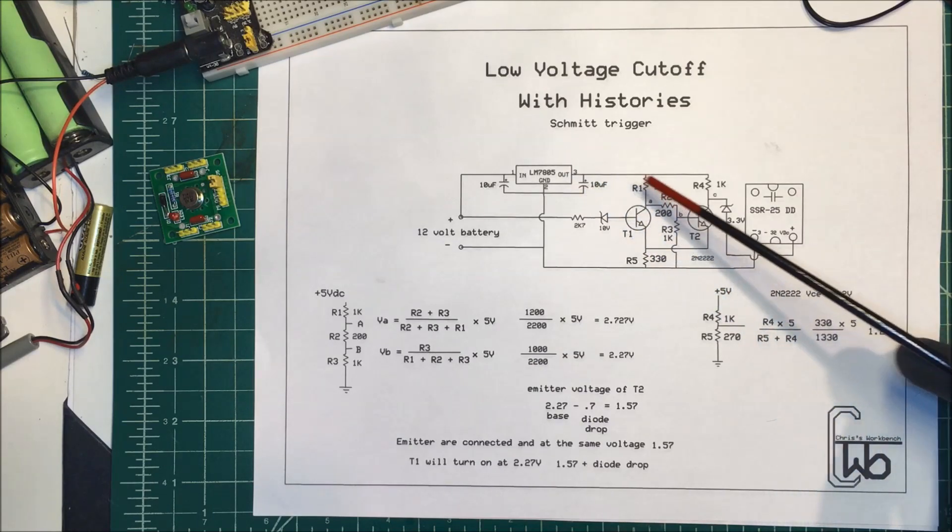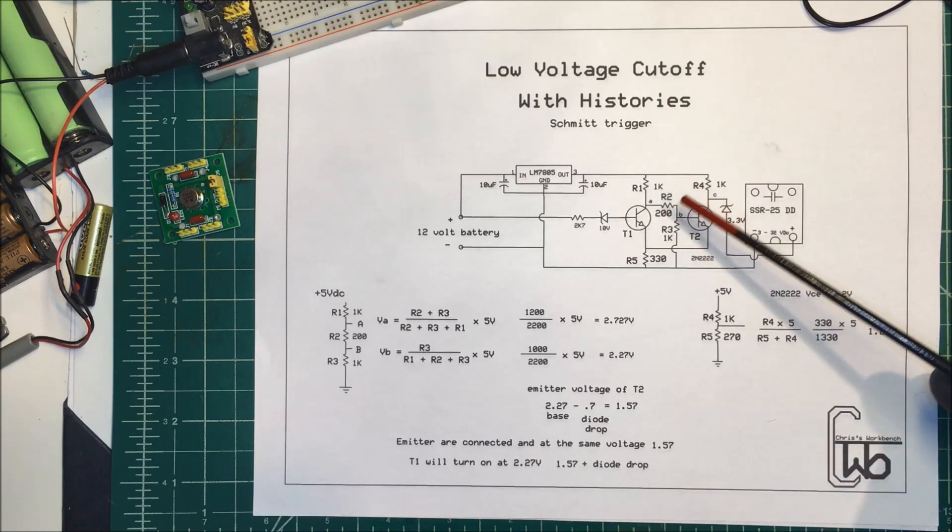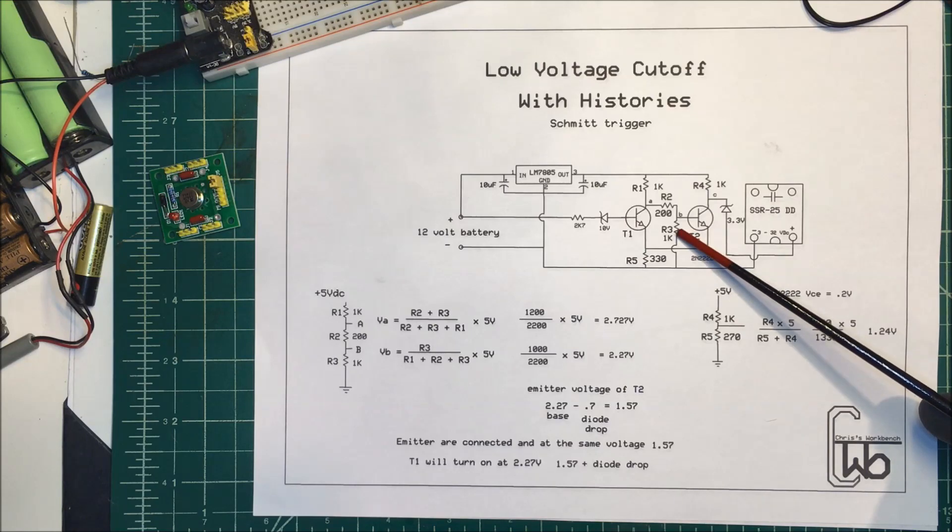And I have a 5 volt regulator so this is my 5 volt rail from here to here and between there I have a 1k, a 200 ohm and a 1k resistor.